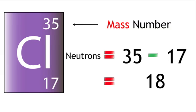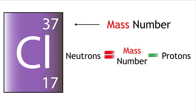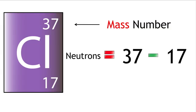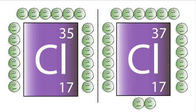So chlorine-37 has a mass of 37. Neutrons equals mass number minus protons. 37 minus 17. 20 neutrons. So chlorine-35 has 18 neutrons and chlorine-37 has 20 neutrons.